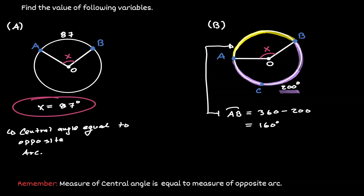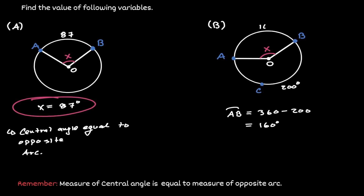Let's put this in a diagram. Now that we know the measurement of the arc opposite of the central angle, we can conclude that angle x also has that measurement of 160 degrees.